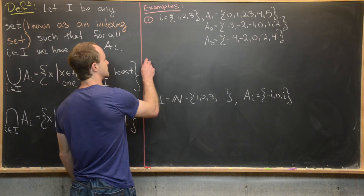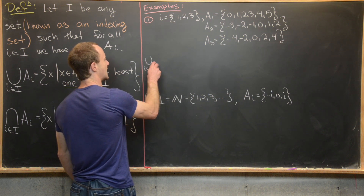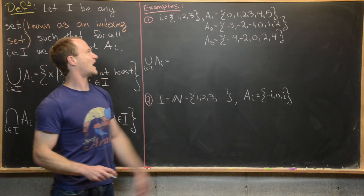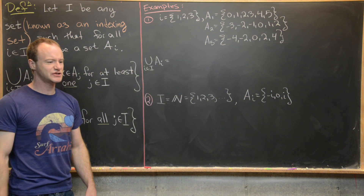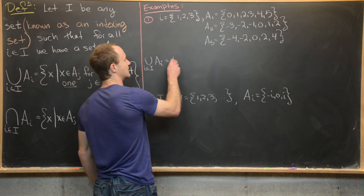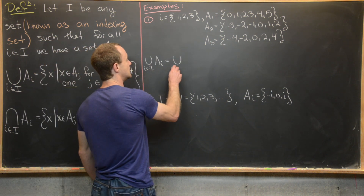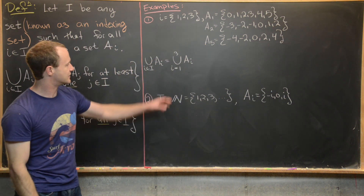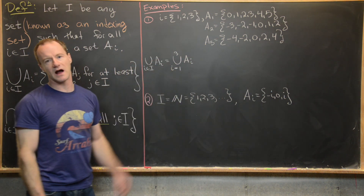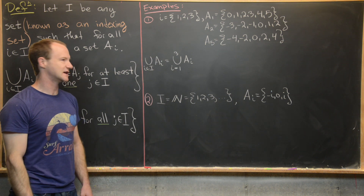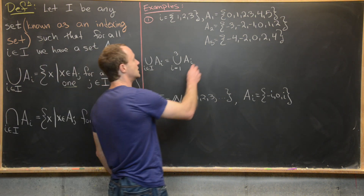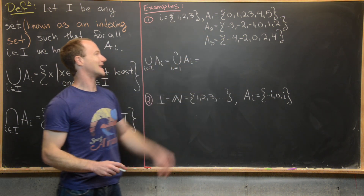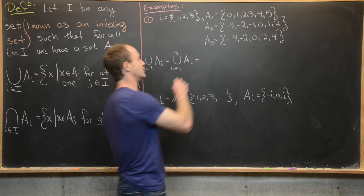Let's start with the union over i in I of A_i. Since we only have a finite number of elements in our indexing set, it's standard to write this as the union as i goes from 1 to 3 of A_i — more in line with what you'd see in a Calculus 2 class when doing series. We're looking for all numbers that are in at least one of these sets.